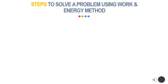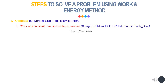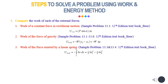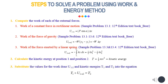To solve a problem using work and energy, follow these steps. First, compute the work of each of the external forces — the work U1 to 2 can be evaluated for: work of a constant force in rectilinear motion, work of the force of gravity, and work of the force exerted by a linear spring. Next, calculate the kinetic energy at positions 1 and 2. Finally, substitute the values for work done U1 to 2 and kinetic energies T1 and T2 into the equation. You may refer to examples in the Vector Mechanics for Engineers Dynamics Textbook, 12th edition, by Beer et al., 2020.